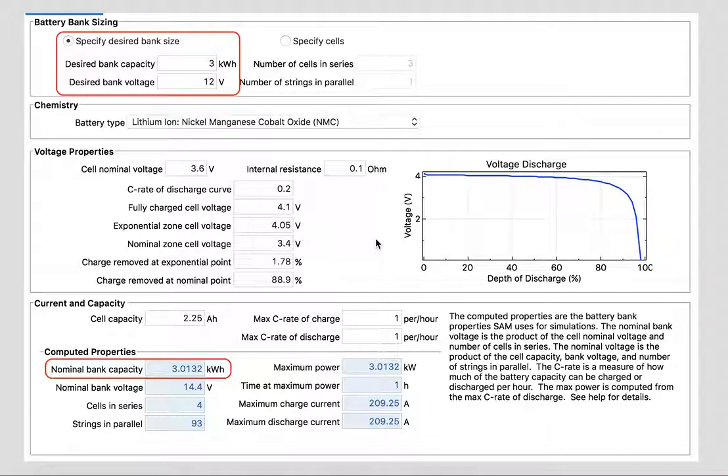Right now I'm showing you a screen capture of the battery sizing for SAM set at the default lithium-ion. In the default, there's a 'specify the desired bank size' option, and SAM will then adjust to meet the nominal voltage required for the system as well as the desired power and energy demanded from the capacity of the battery bank.